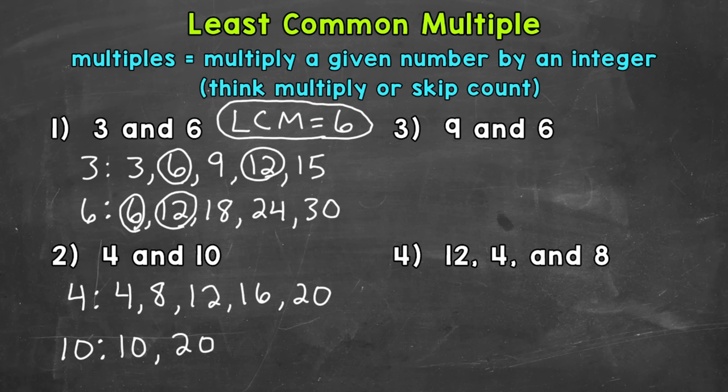And you may notice that we have something in common there. And that's going to be the least common multiple. If you notice that you have a least common multiple, there's no need to keep writing out multiples. We have our answer. So 20 is going to be our least common multiple. So least common multiple equals 20.